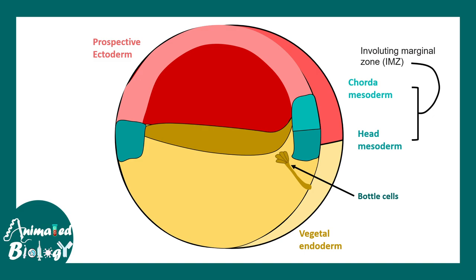Both the chorda mesoderm and head mesoderm together form the involuting marginal zone (IMZ). The second movement we are talking about is involution. Involution means sliding one sheet of cells below another. Following the arrows, we can see how these mesodermal cells eventually involute and grow slowly just beneath the ectodermal layer.